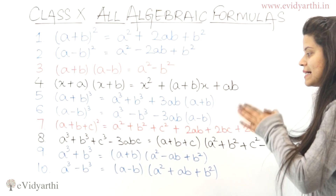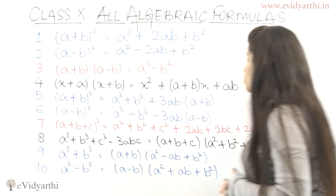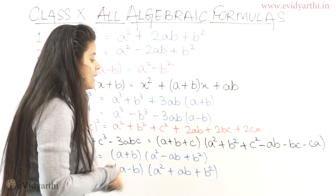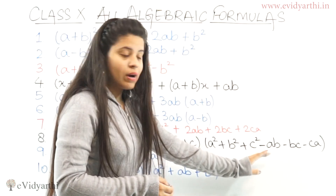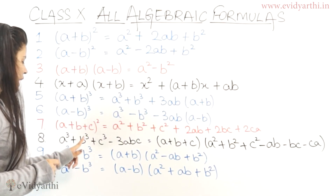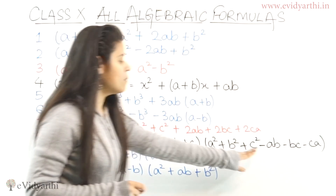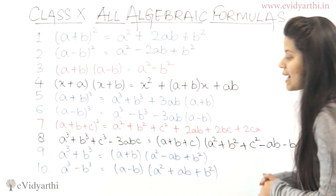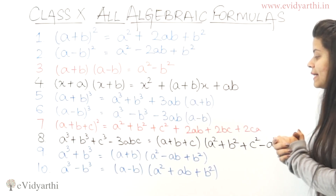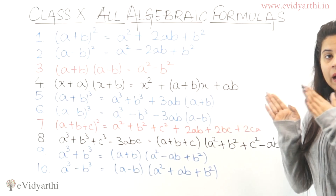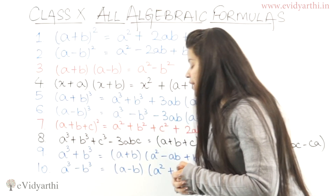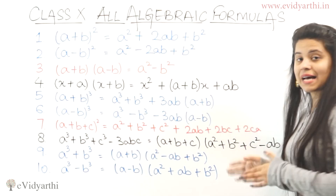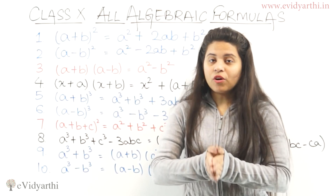Then we have A cubed plus B cubed plus C cubed minus 3ABC, which equals A plus B plus C times A squared plus B squared plus C squared minus AB minus BC minus CA. Then A cubed plus B cubed equals A plus B times A squared minus AB plus B squared. And A cubed minus B cubed equals A minus B times A squared plus AB plus B squared. These are the basic algebraic formulas you need to memorize.